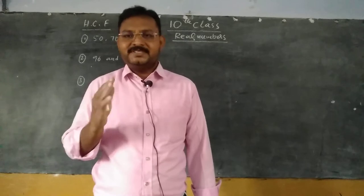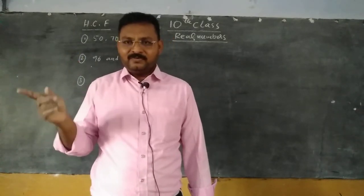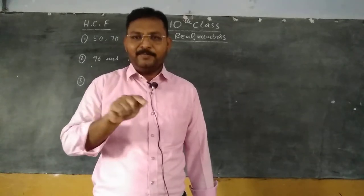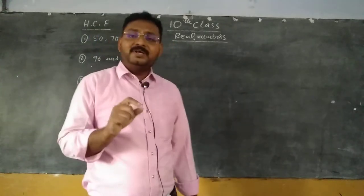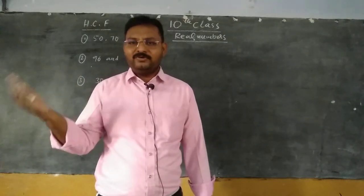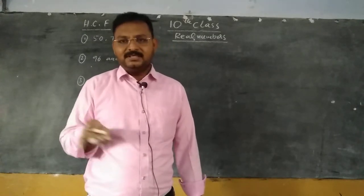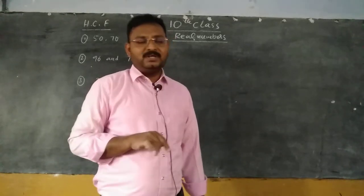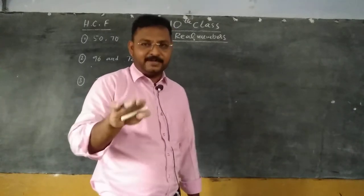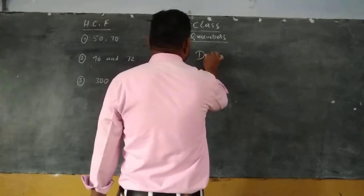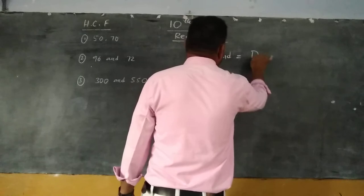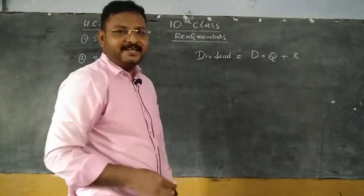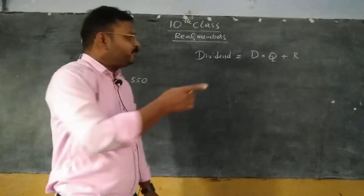When we recall Euclid's division lemma again, the actual division we can write in another way. That other process is called Euclid's division lemma. They will give dividend and divisor, so we have to divide and find quotient and remainder. That way is: dividend is equal to divisor into quotient plus remainder. This process is called Euclid's division lemma.